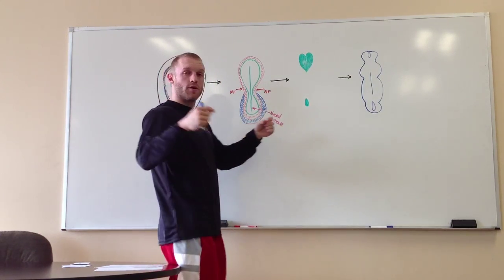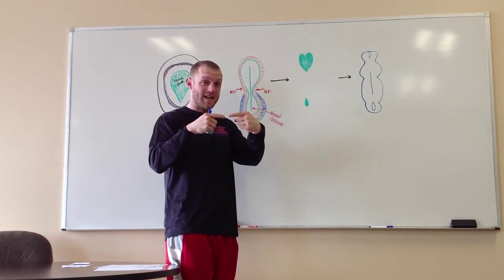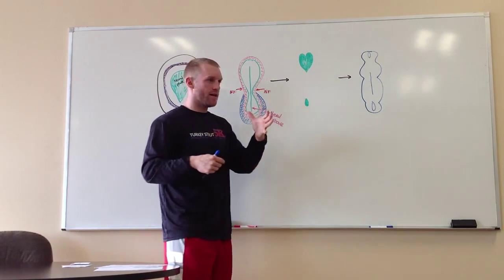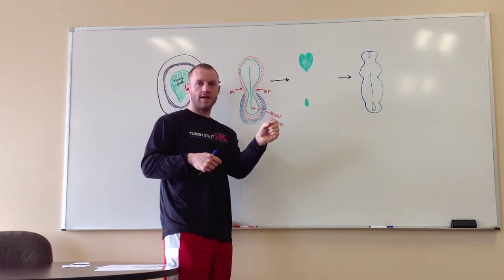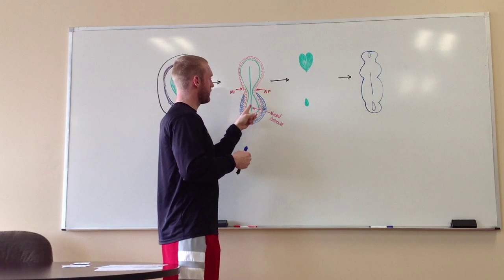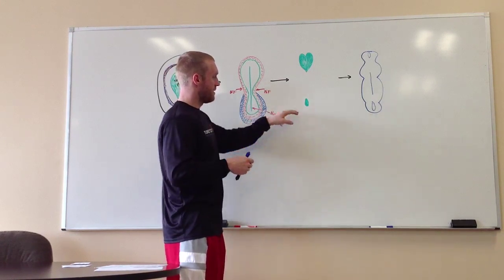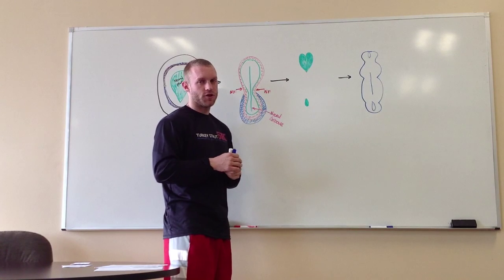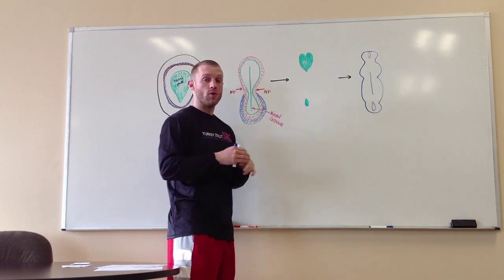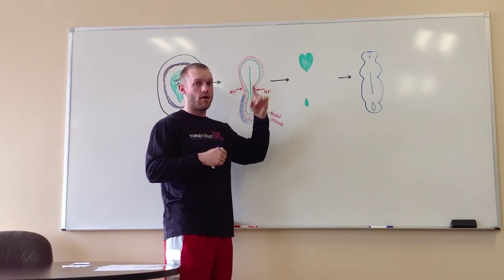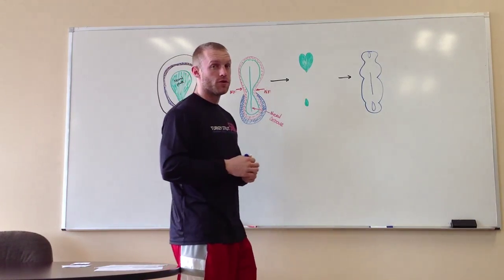So step two, neural folds press in, creates the groove. That's what I kind of said about the Twinkie. You press in the Twinkie, it starts making a crease on the inside, and then as we get down into this next picture, I'll show you the neural pores, which are the openings on the end of the formation of the neural tube, okay?